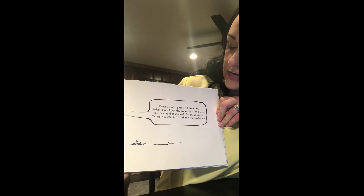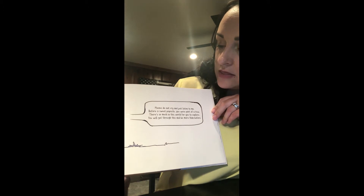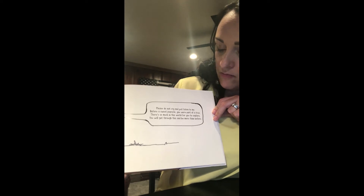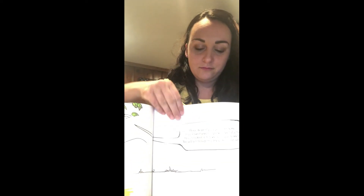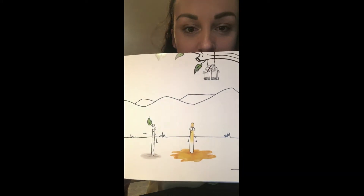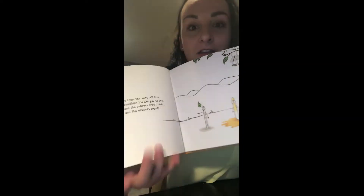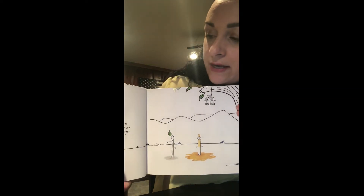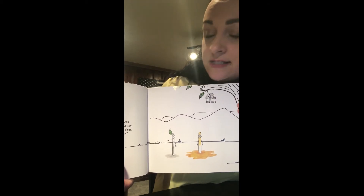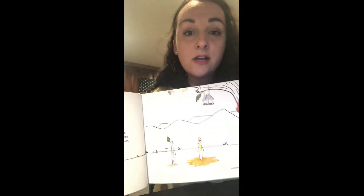"Please do not cry and just listen to me. Before a sweet Popsicle, you were part of a tree. There's so much in this world for you to explore. You will get through this and be more than before." Now Twig has jumped down and is pointing. "Twig quickly jumped down from the very tall tree and said: Stick, there is something I'd like you to see. Some things happen and the reasons aren't clear, but give it some time and the answers appear."